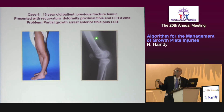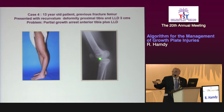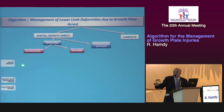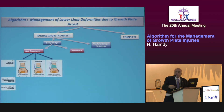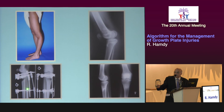Case four: a thirteen-year-old with recurvatum deformity of the proximal tibia and partial growth arrest — a pattern seen in seven patients. This commonly results from a femur fracture where proximal tibial ligament injury is missed. Referring to the algorithm: non-resectable bony bridge → address alignment, maintain correction, and correct LLD. A Taylor Spatial Frame was applied to gradually correct the malalignment and simultaneously address the LLD, as the patient was near skeletal maturity.